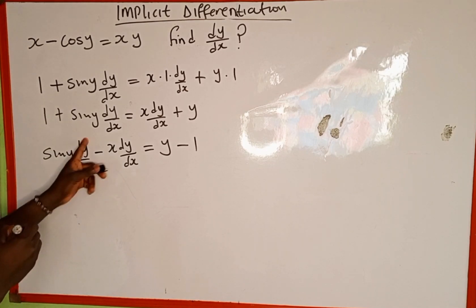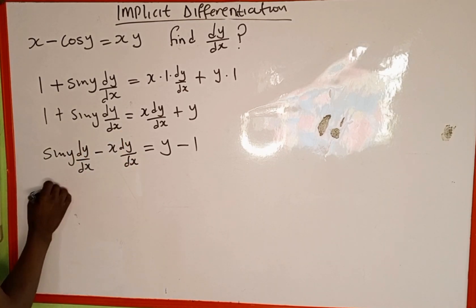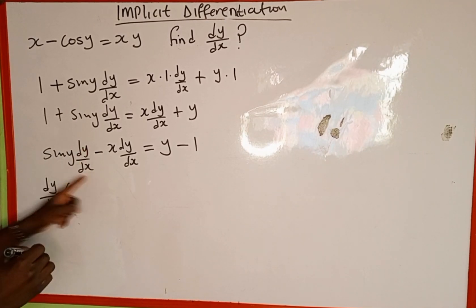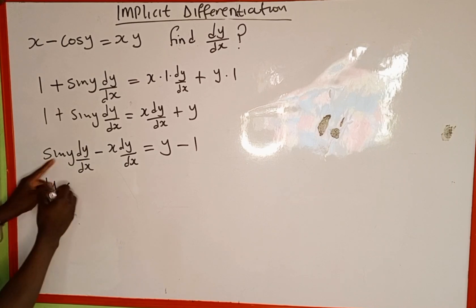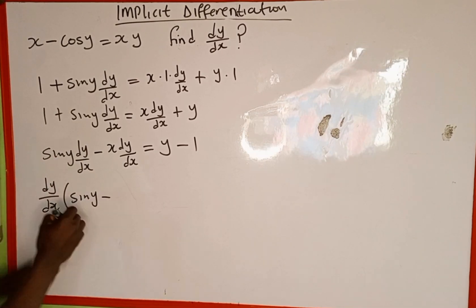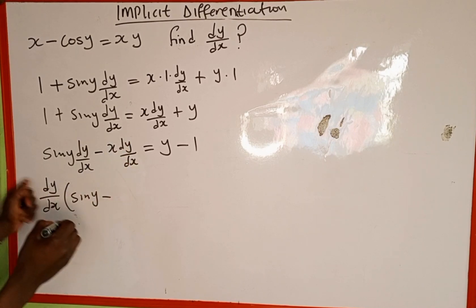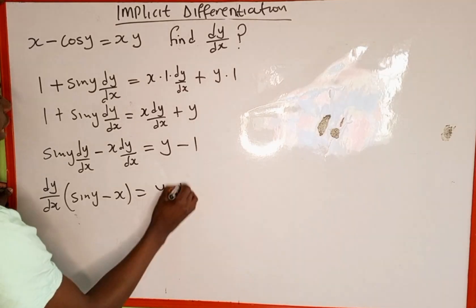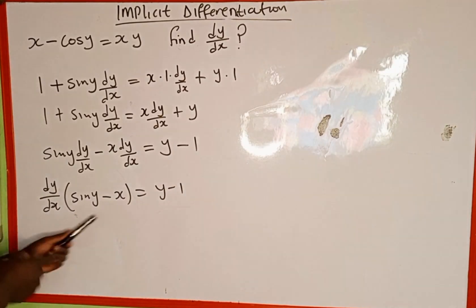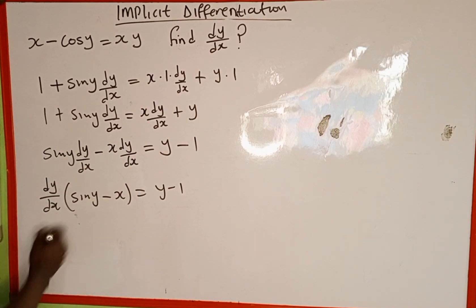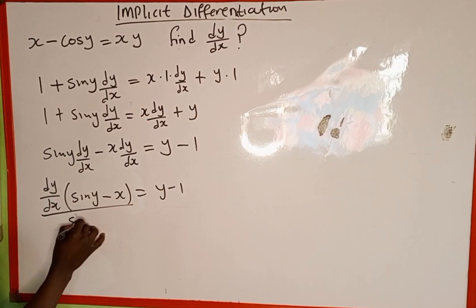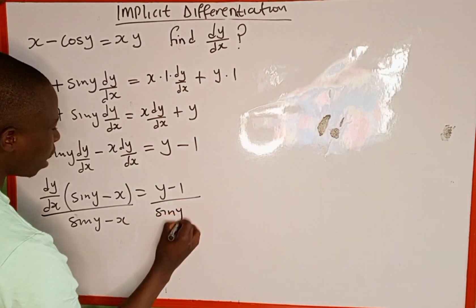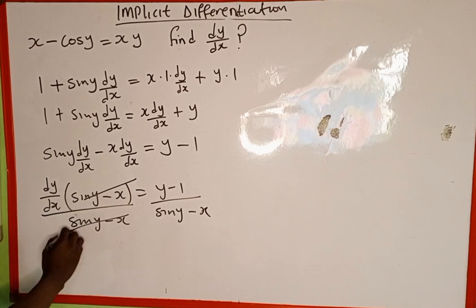Now we factor out the common factor dy over dx. So we factor out dy over dx and open the bracket — inside the bracket we get sine y minus x — which equals y minus 1. Now we divide both sides by sine y minus x, so that cancels, leaving us with dy over dx isolated.